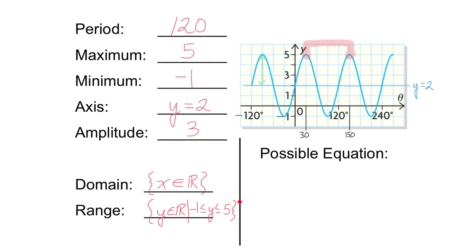Domain and range, we figure that out the same way we normally do. There are no restrictions on x, because this is a periodic function. It keeps going all the way to the right, all the way to the left, everything in between. x can be any value, no restrictions. However, there are restrictions on y. The minimum value is minus 1, the maximum is 5.